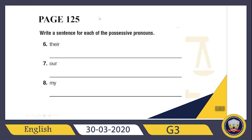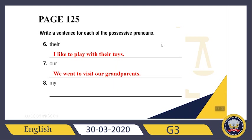Let's check the others. It says: write a sentence for each of the possessive pronouns. The first one is 'their', the second one is 'our', and the third one is 'my'. You can construct your own sentence and then check. Let's check what I wrote: I like to play with their toys — these toys belong to them. We went to visit our grandparents — they are our grandparents. I always finish my homework — this homework is for me.